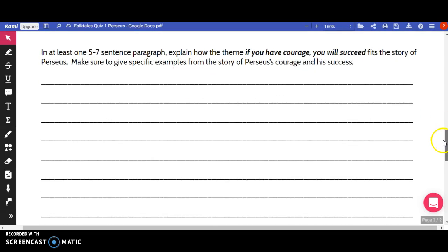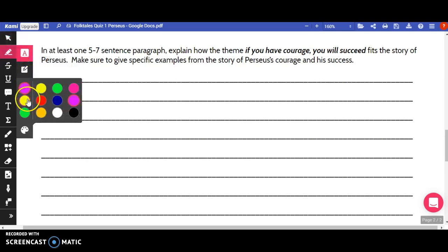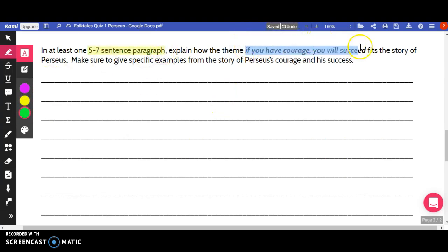The second paragraph that you need to write says, in at least one five to seven sentence paragraph, explain how the theme, if you have courage you will succeed, fits the story of Perseus. Make sure to give specific examples from the story of Perseus' courage and his success.